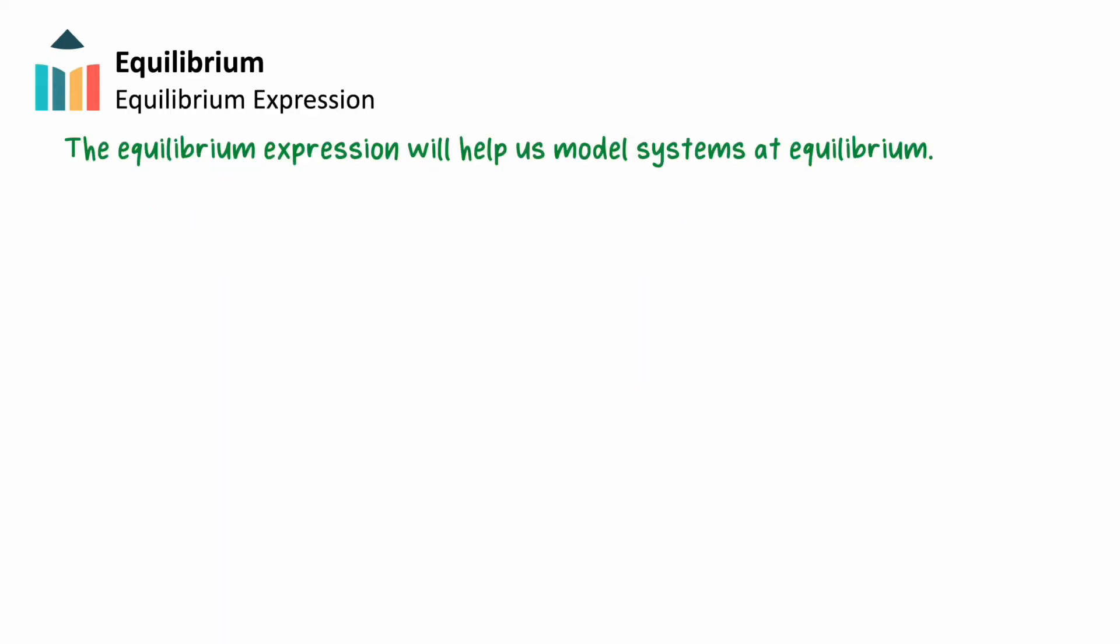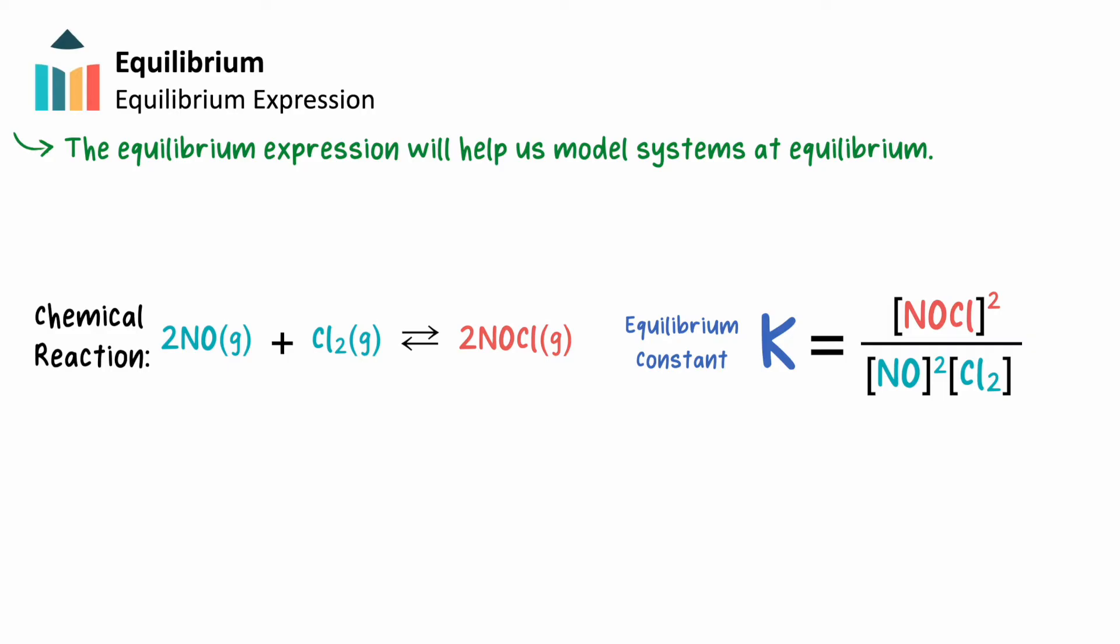In order to model chemical systems in equilibrium, we need to understand the equilibrium expression, which can be derived from a balanced chemical equation. For example, given the chemical equation 2NO + Cl2 makes 2NOCl, the expression for the equilibrium constant K takes the concentration of NOCl squared divided by the concentration of NO squared times the concentration of Cl2.